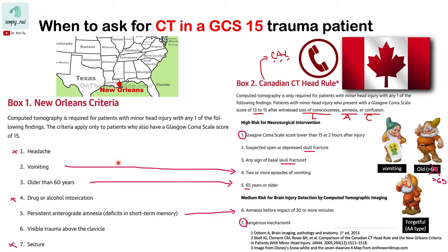Three of these findings are present in the Canadian CT Head Rule. To remember what these three criteria are, think about the dwarf who is vomiting, another who is old, and the other one who is forgetful went to Canada. So if you have two or more episodes of vomiting, 65 years or older — note here, 65 not 60 — and if you have amnesia, that warrants a CT in the Canadian CT Head Rule.